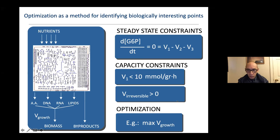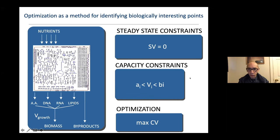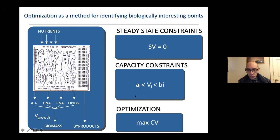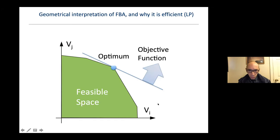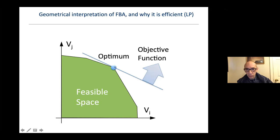There were assumptions of capacity limits for the nutrients coming in and for some reactions known to be irreversible. We showed that one can use optimization — for example, finding the state optimal for the cell to efficiently produce its biomass through maximization of the growth rate. One can write this problem with a steady state expressed as the vector of fluxes multiplied by the stoichiometric matrix, with upper and lower bounds on each flux, optimized using linear programming.